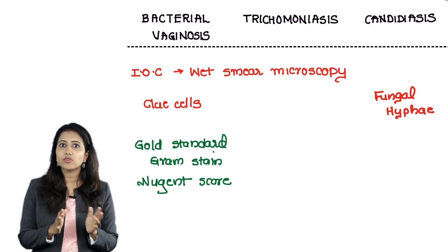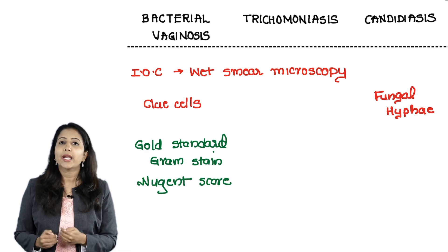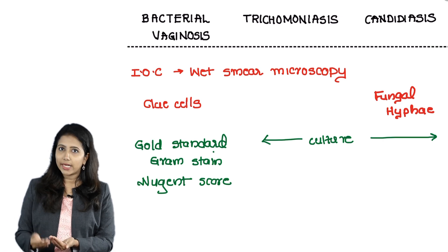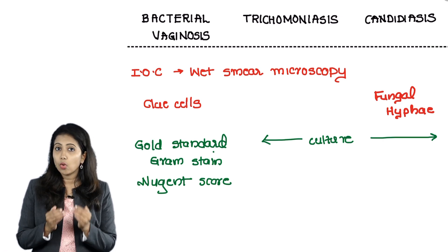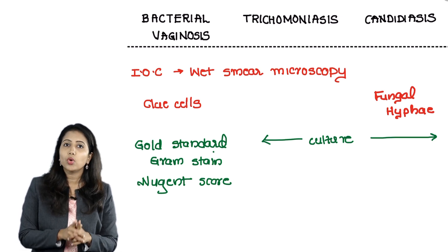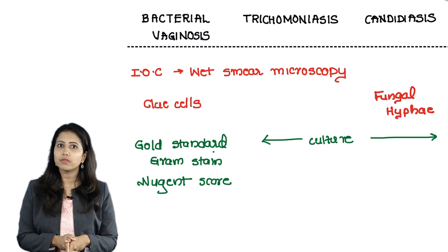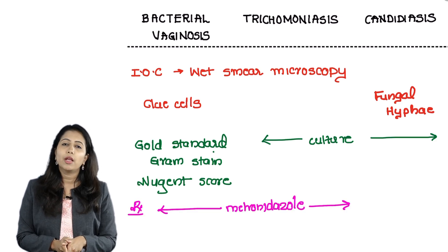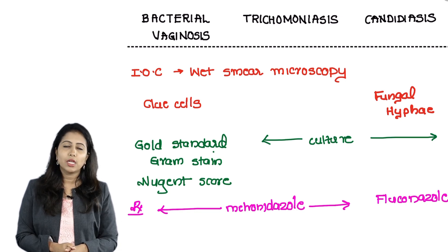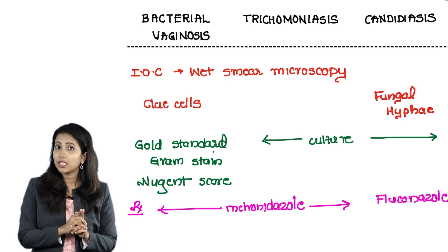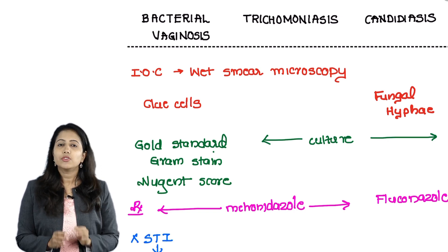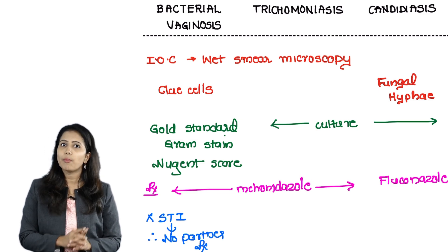The Nugent score is used in bacterial vaginosis. In candidiasis we do culture using Sabouraud dextrose agar, whereas in trichomonas the gold standard investigation is also culture. Coming to treatment, both trichomonas and bacterial vaginosis are treated using metronidazole, whereas for candidiasis we give fluconazole. Please note that bacterial vaginosis is not a sexually transmitted infection, so partner treatment is not needed in bacterial vaginosis.